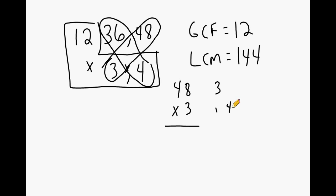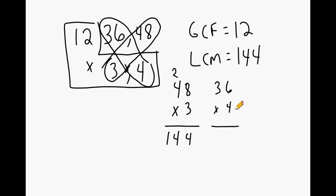Let's verify that by multiplying these numbers out. 3 times 48: 3 times 8 is 24, carry the 2, 3 times 4 is 12, plus 2 is 14 — giving us 144. And 4 times 36: 4 times 6 is 24, carry the 2, 4 times 3 is 12, plus 2 is 14 — also giving us 144. So you can multiply the GCF by both numbers at the bottom, or cross multiply a bottom number with the original top number to get the LCM.